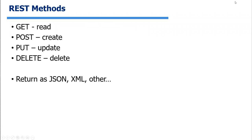Each REST method corresponds to a CRUD operation. GET reads, POST creates, PUT updates — with PUT you have to pass a body containing the update — and DELETE removes data. For read and delete you just pass the id; for POST and PUT you need a body. Results can be returned as JSON or XML; right now JSON is most common, though XML has some benefits around cross-linkages and metadata.